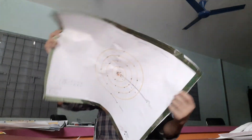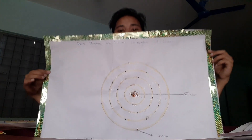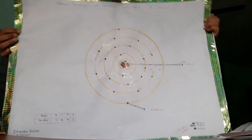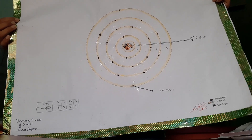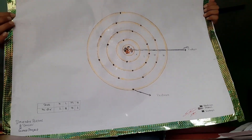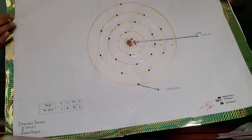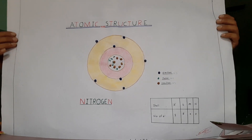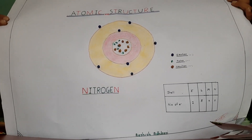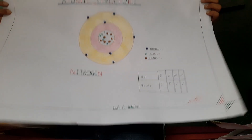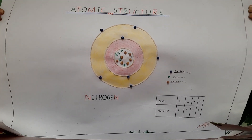The next project work is made by Devendra. His frame is so beautiful and he has also used different types of cereals. He has made the atomic model of nitrogen.